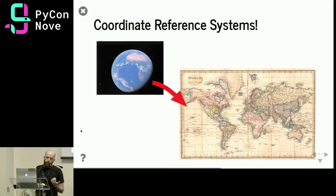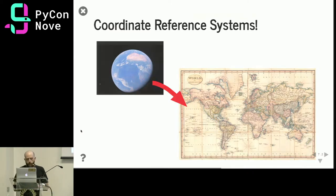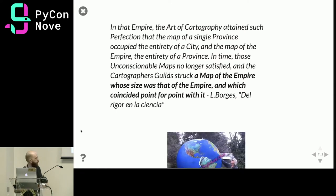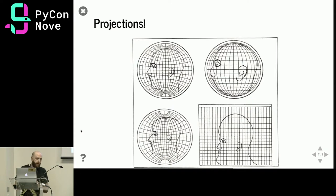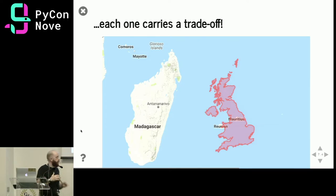With geometries and latitudes and longitudes in hand, let's move to coordinate reference systems. The main problem cartographers are trying to solve is how to transpose our reality — which lives on a sphere — onto the flat surface of a map. There are different ways to approach this. You can use projections, and there are different kinds: azimuthal projections maintain direction, conformal projections maintain local angles and therefore shape, equidistant projections maintain distance from the center, and equal-area projections preserve the area of features.